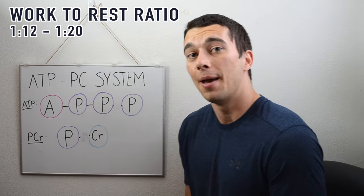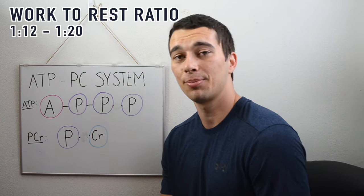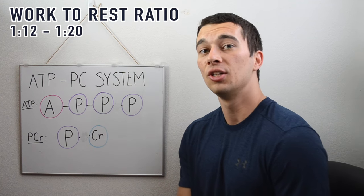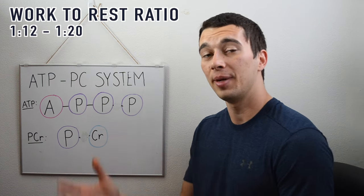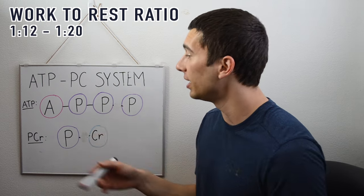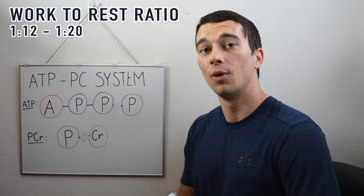Meaning that if we're doing a 10-second sprint, we're going to rest for 120 seconds to 200 seconds. And that two minutes of rest will allow the body to reform ATP so that we can do another high-intensity effort after that.